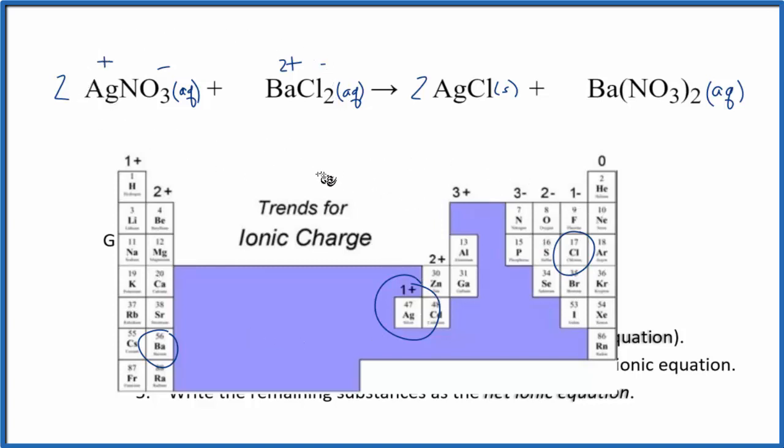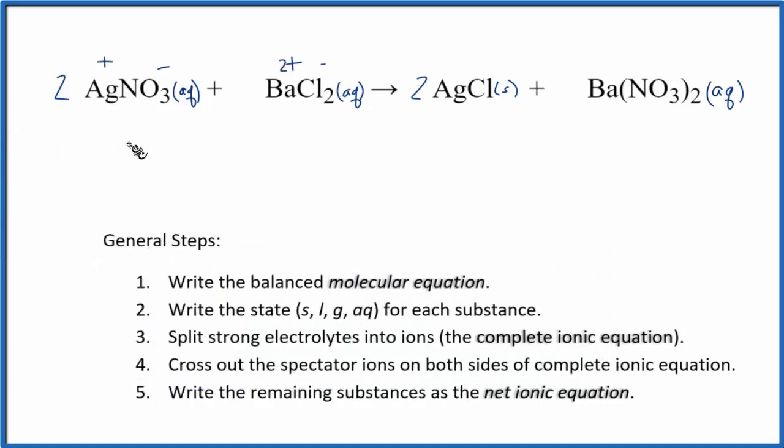We have Ag+, the silver ion. I won't write aqueous each time - we'll write that at the end. We have two of them, so we'll put a 2 in front as our coefficient. Plus we have the nitrate ion, NO3-. This 2 applies to everything, so we have two nitrate ions. We have the barium ion, Ba2+, and the chloride ion, Cl-. This subscript means we have two of those. These are the reactants.